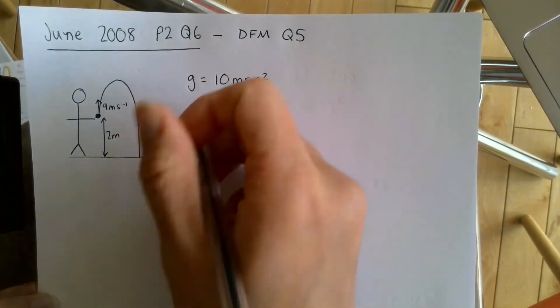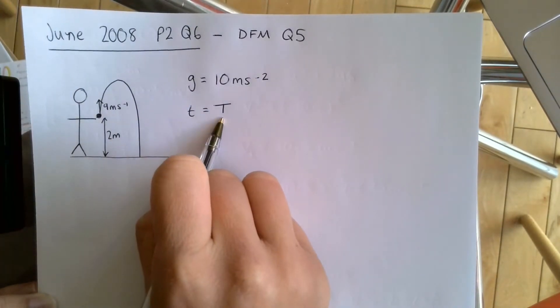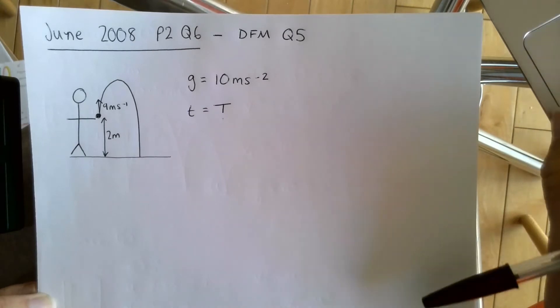It says the ball hits the ground after a time of T seconds and we need to work out what that capital T is, so how long it takes for the ball to hit the ground.